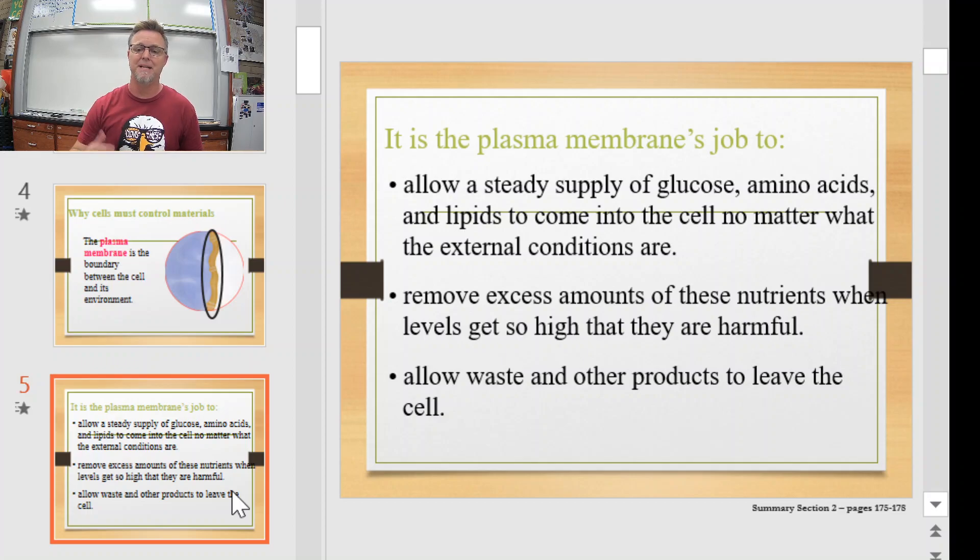The plasma membrane's job is to allow a steady supply of life-giving molecules like glucose, amino acids, and lipids. These have to be constantly moved into the cell no matter what the external conditions are. It also has to remove anything that shows up in excess. So if you get too much glucose, too much amino acids, too many lipids, you get waste that builds up, or even just plain old water. That stuff's got to be removed.